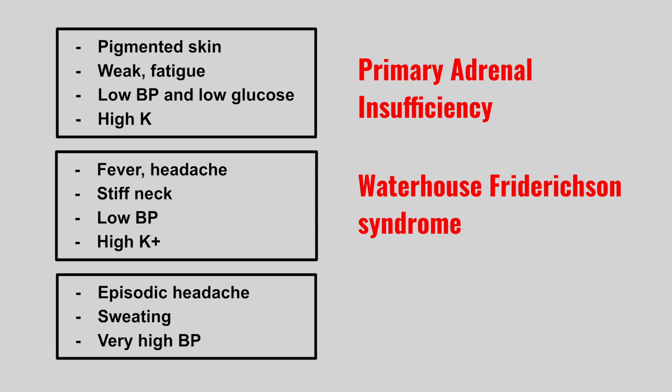The next patient has episodic headache, sweating, and very high blood pressure. This is a pheochromocytoma, which comes from the adrenal medulla. Specifically, the chromaffin cells secrete catecholamines, causing episodic headache, palpitations, hypertension, and sweating. To treat, you give an alpha blocker first and then a beta blocker.